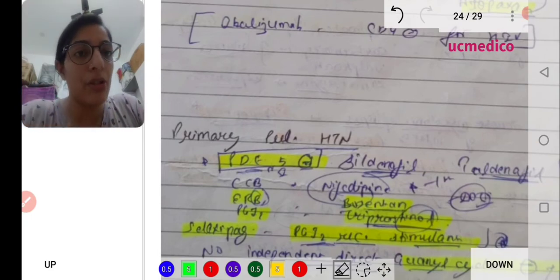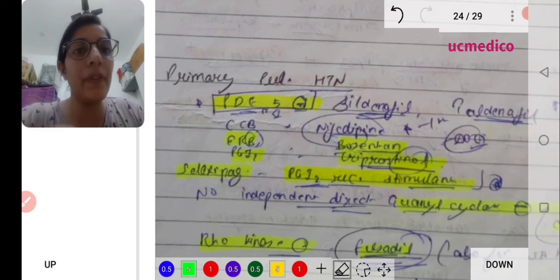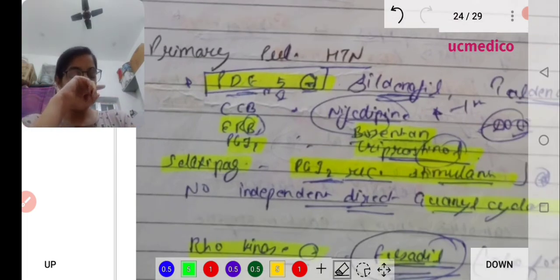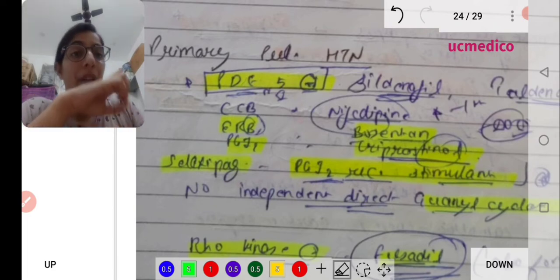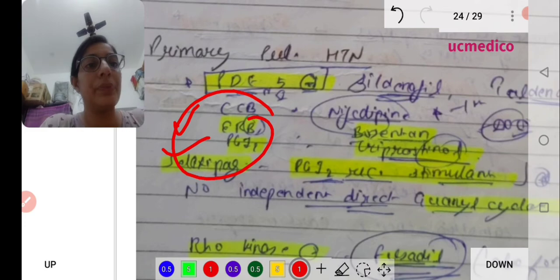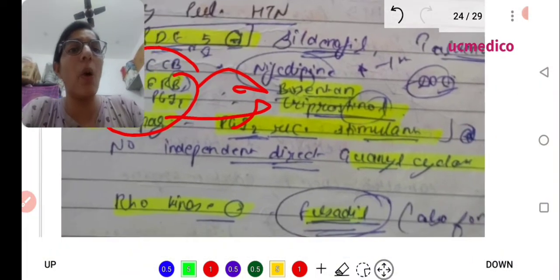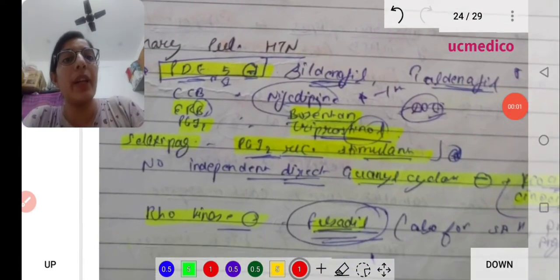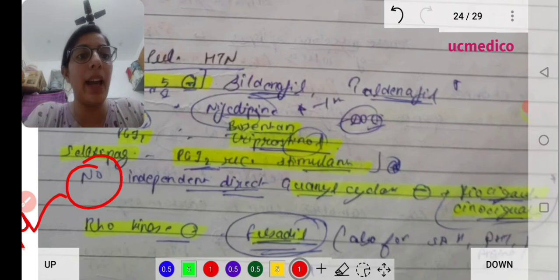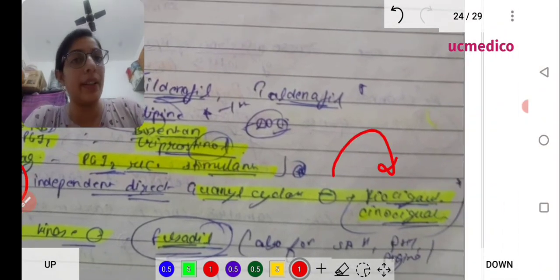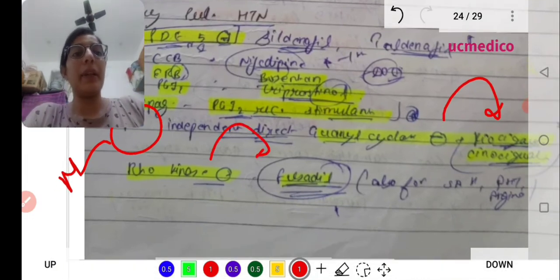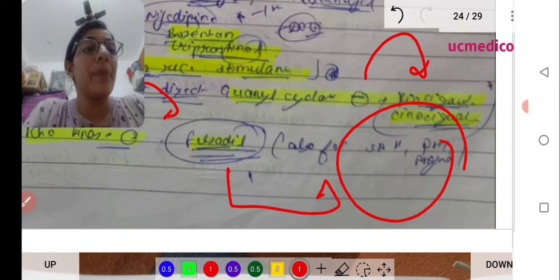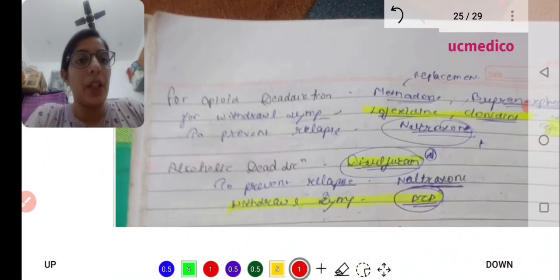Primary pulmonary hypertension - we've discussed PDE5 inhibitors like sildenafil, vardenafil, and tadalafil. Calcium channel blockers, angiotensin ERB inhibitors. Prostacyclin I2, ambrisentan, and prostanoids like treprostinil. We've already seen receptor agonists. Riociguat is a nitric oxide-independent direct guanylate cyclase stimulator. Fasudil - this can also be given for subarachnoid hemorrhage and angina.